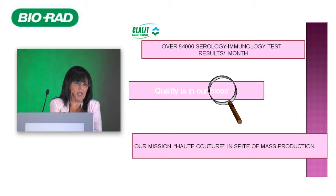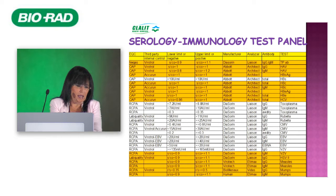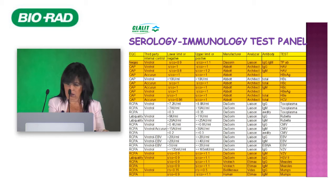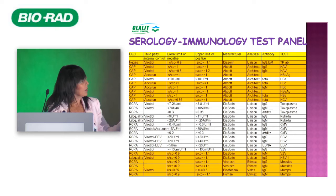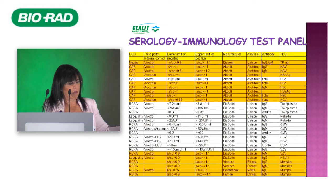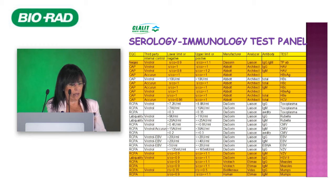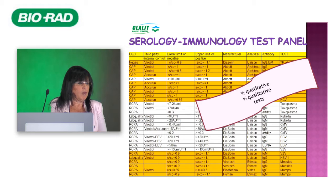Our mission is performing over 80,000 serology and immunology tests per month with the highest quality — quality is in our blood and other specimens. We want to make haute couture despite the mass production. More than half of our tests are sample-to-cutoff or semi-quantitative tests. In my opinion, even qualitative tests have a number behind them and can be managed with quality control rules similar to those used in clinical chemistry.